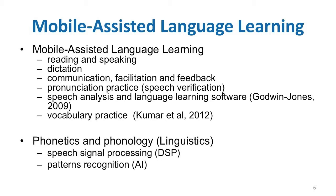ASR is also the basis for commercial dictation systems such as Dragon Naturally Speaking. Such systems tend to work better with native speakers, but we can increase accuracy further by training the system to recognize particular voices. Nowadays, many of the speech tools can detect with rather high accuracy pronunciation mistakes, distortions in the speech, and difficulties in speaking and reading, thus helping students with their pronunciation practice or with their reading practice, for example.